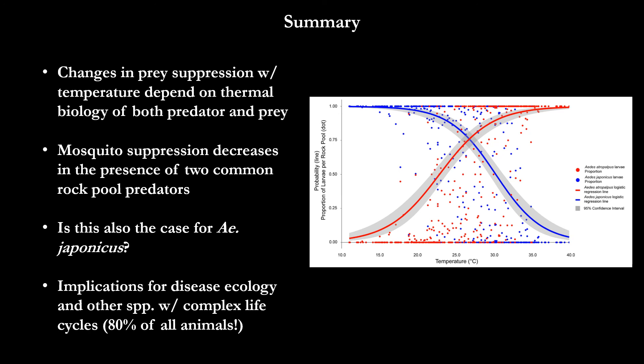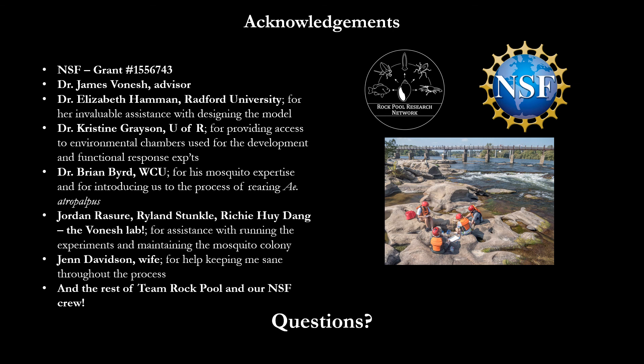Lastly, many other species of animals have complex life cycles with distinct life stages that may differ in how vulnerable they are to predators — examples range from other insects to frogs and even some fish which change habitats as they grow. So these types of warming-driven changes in predation may be very important to consider as the climate continues to warm. I'd like to thank my advisor James Vonish and the rest of my lab and our larger research group for assistance with this project. Thank you all for your time and I'm happy to take questions now.